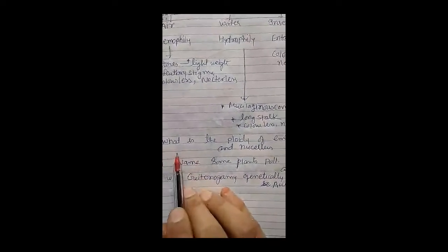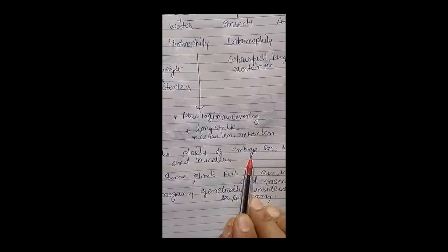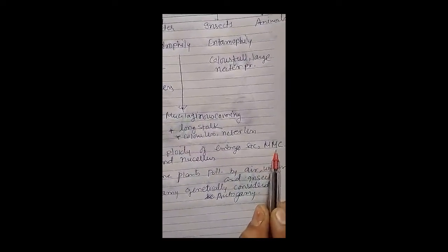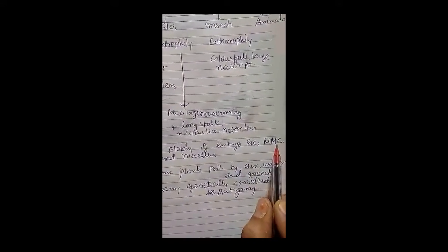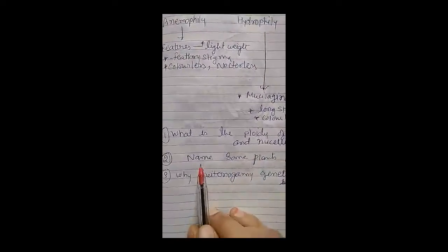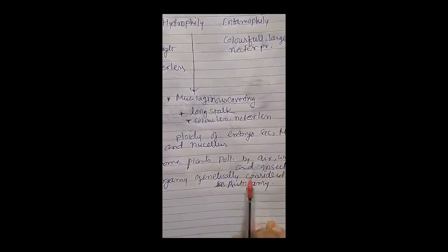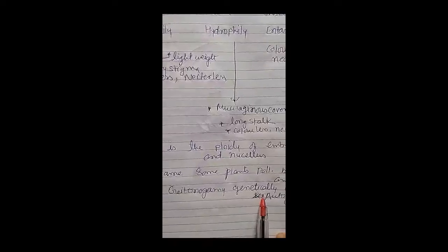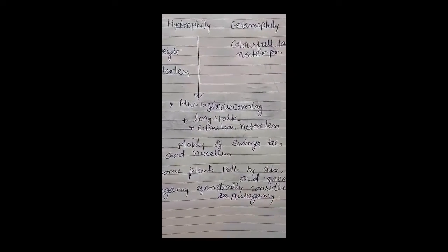For homework: What is the ploidy of the embryo sac, the megaspore mother cell (MMC), the functional megaspore, and the nucellus? Also, name some plants pollinated by air, water, and insects. And explain why geitonogamy is genetically considered autogamy.